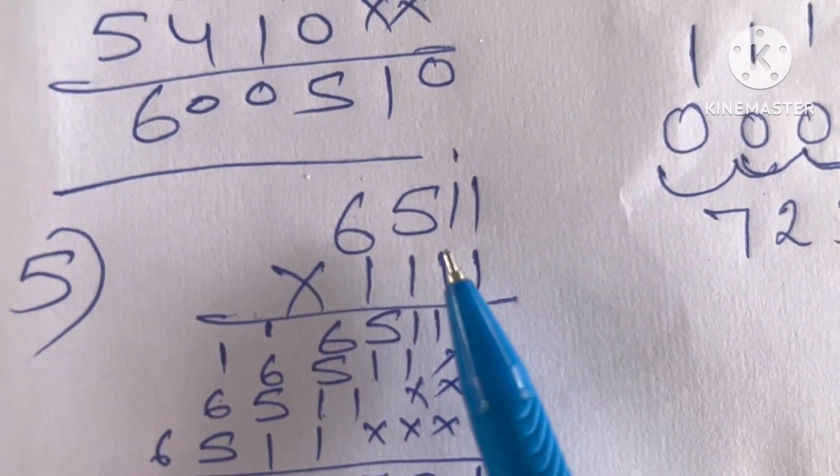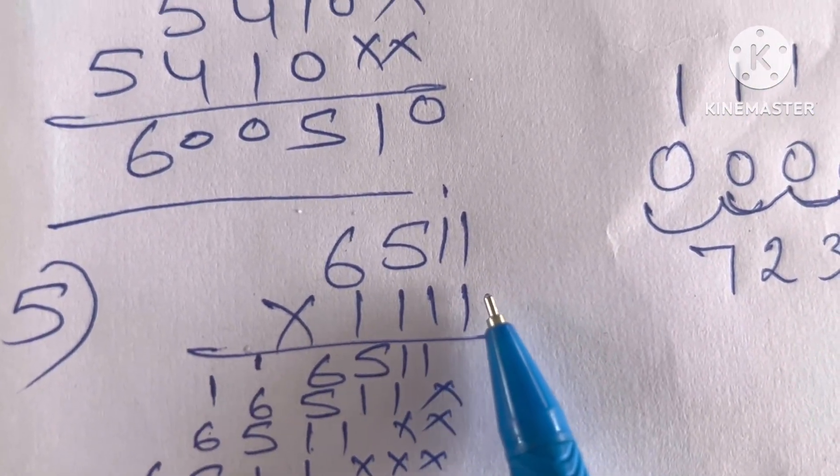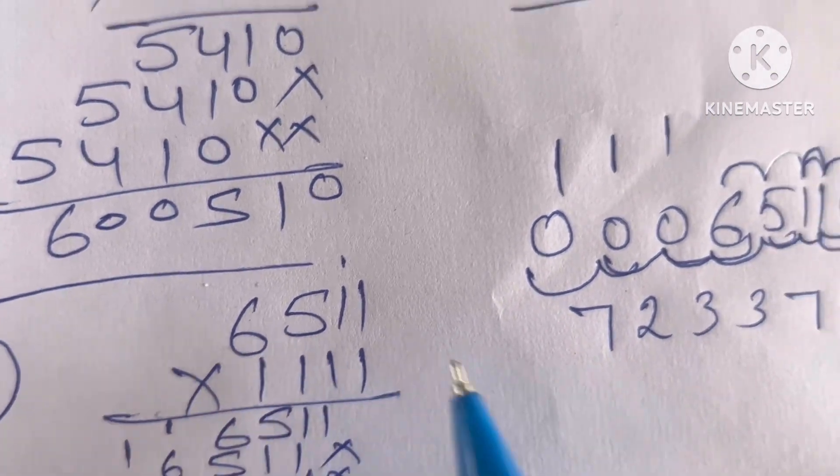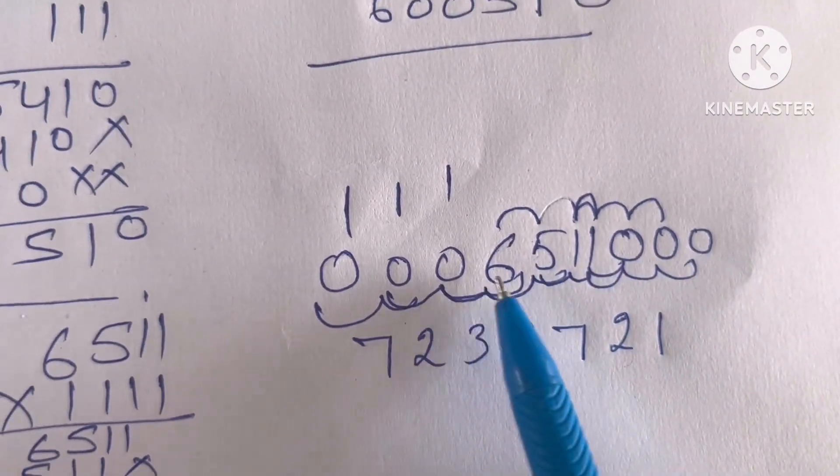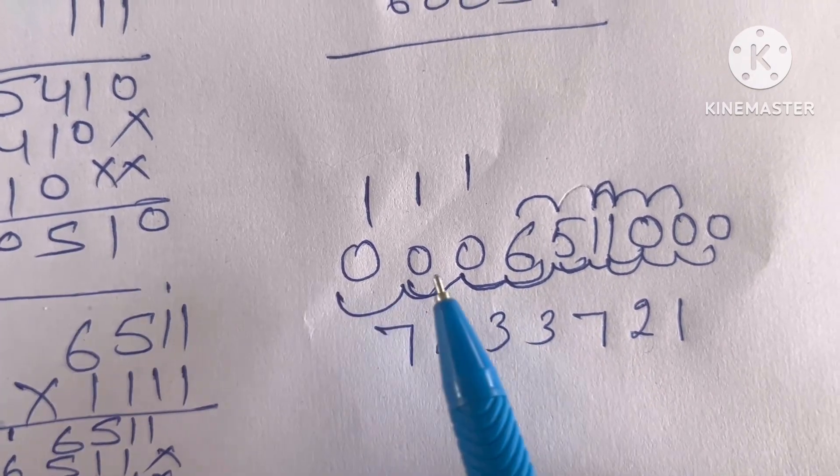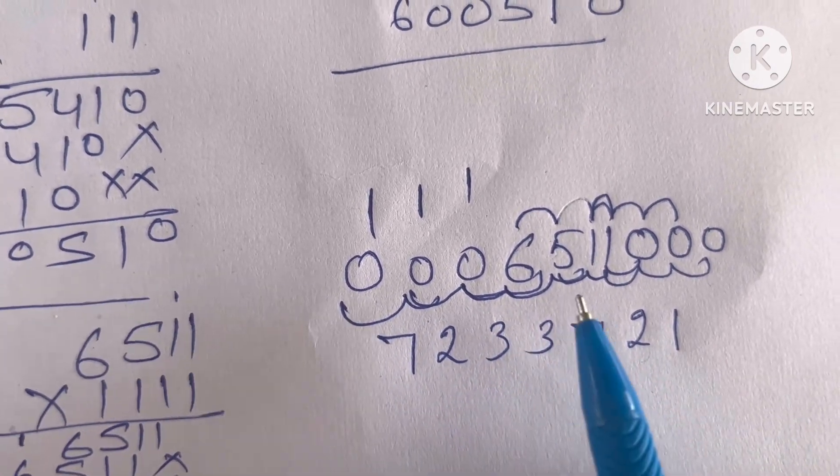Similarly, you can multiply by 1111. In this case, you have to put three zeros on both sides. Three zeros on this side and three zeros on this side. In this case, you have to add four numbers.